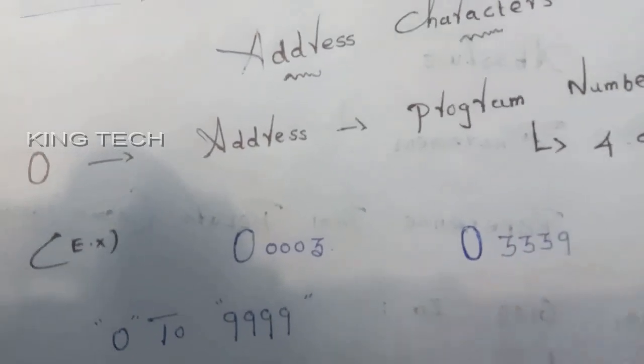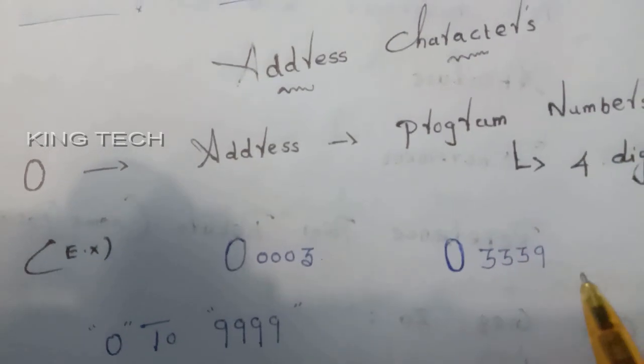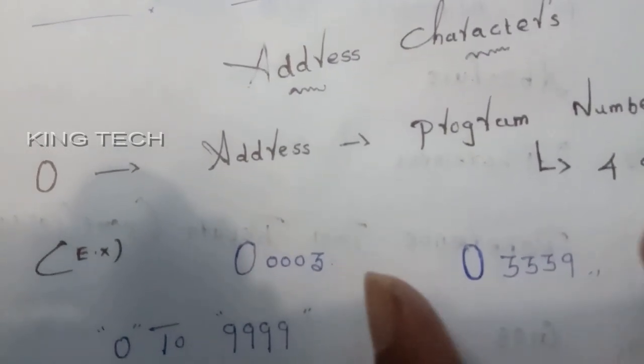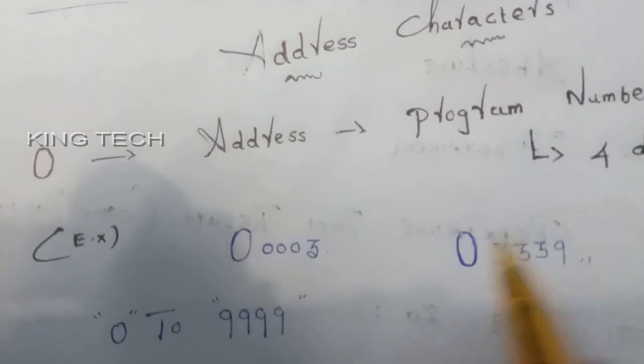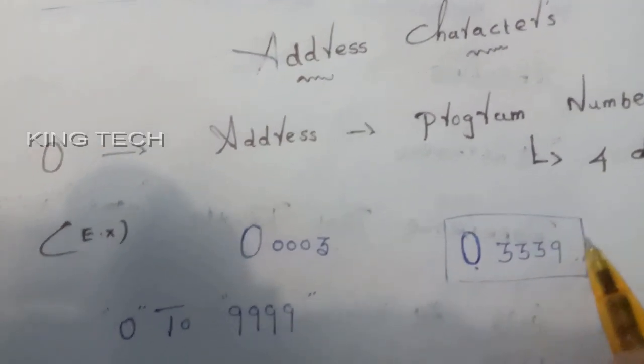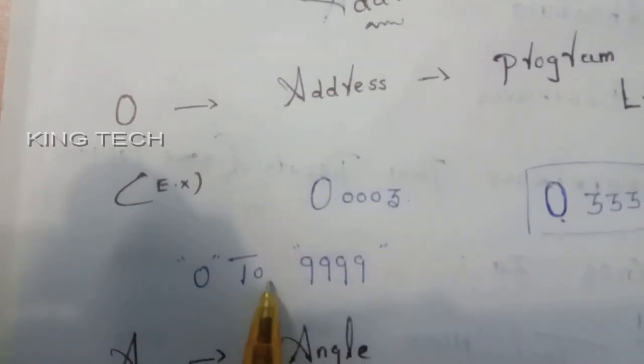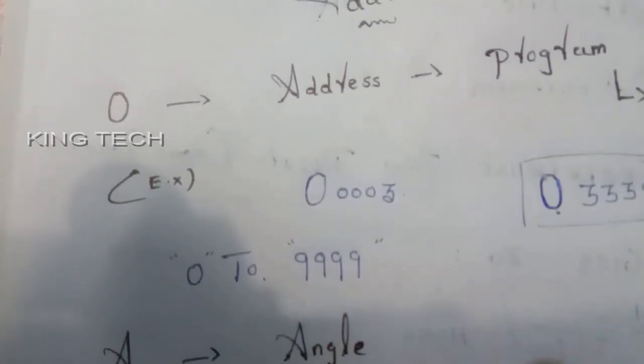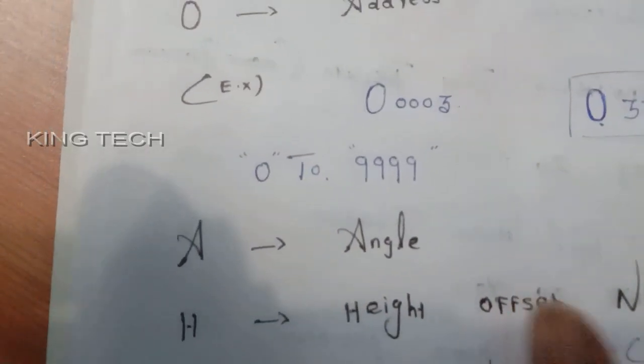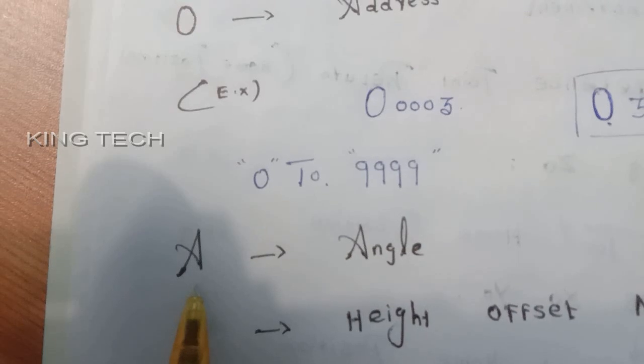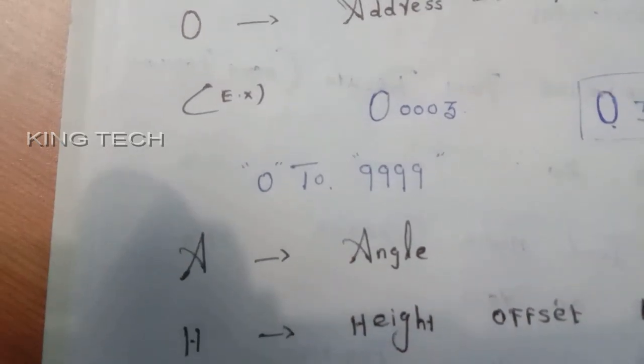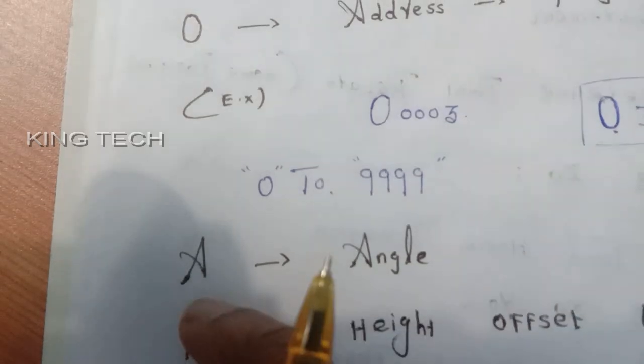Address characters, program save address. For example, 0 to 9999. A means angle.